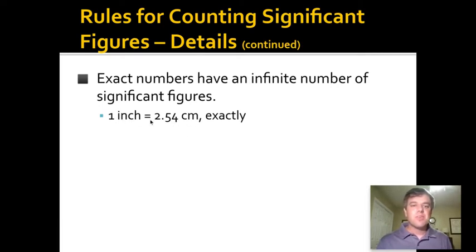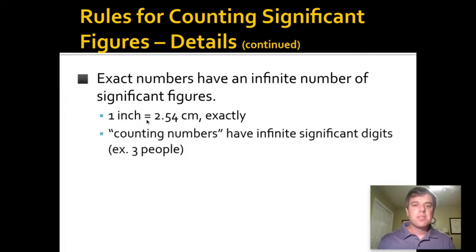There's other cases where, for instance, one inch has been defined as 2.54 centimeters exactly, so if you were using this conversion you don't gain or lose significant figures with this. And counting numbers have infinite significant digits. For instance, if you said three people, well there's exactly three people—people only come in whole number quantities.